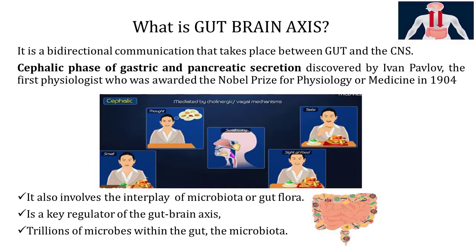Now let's see what is gut-brain axis. By the name gut-brain axis, we know that it is a bi-directional communication that takes place between the gut and the central nervous system. The first brilliant demonstration of gut and brain interaction was the cephalic phase of gastric and pancreatic secretion that was discovered by Ivan Pavlov. Just the thought, the sight or the smell of the food increases gastric secretion.